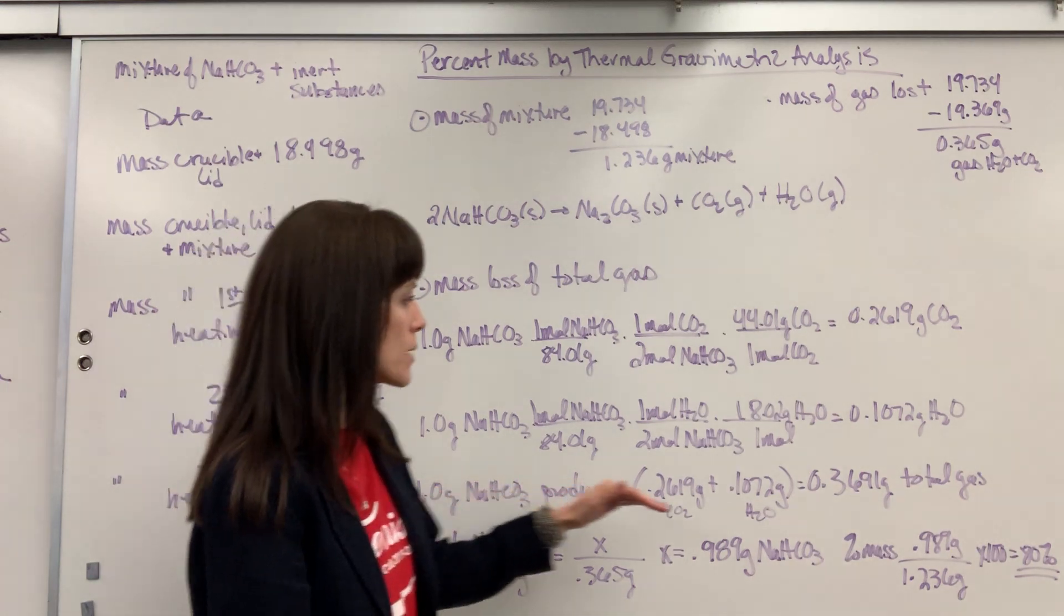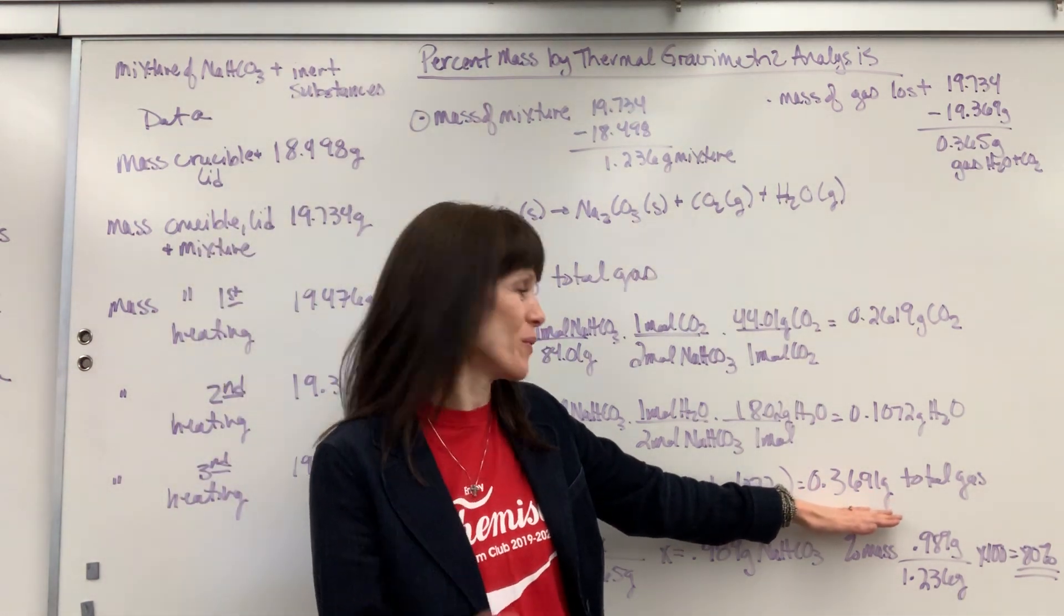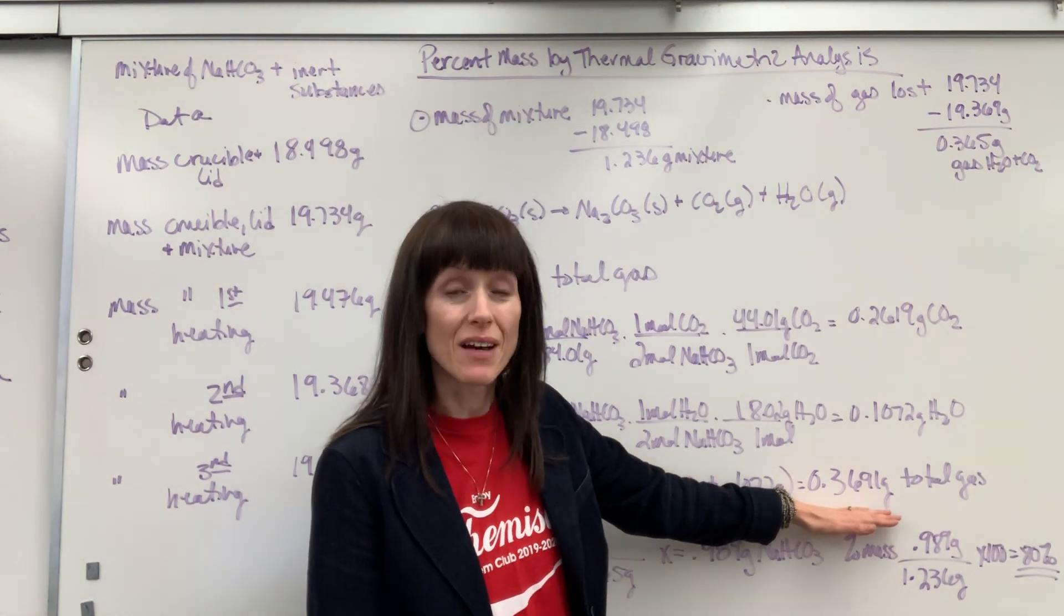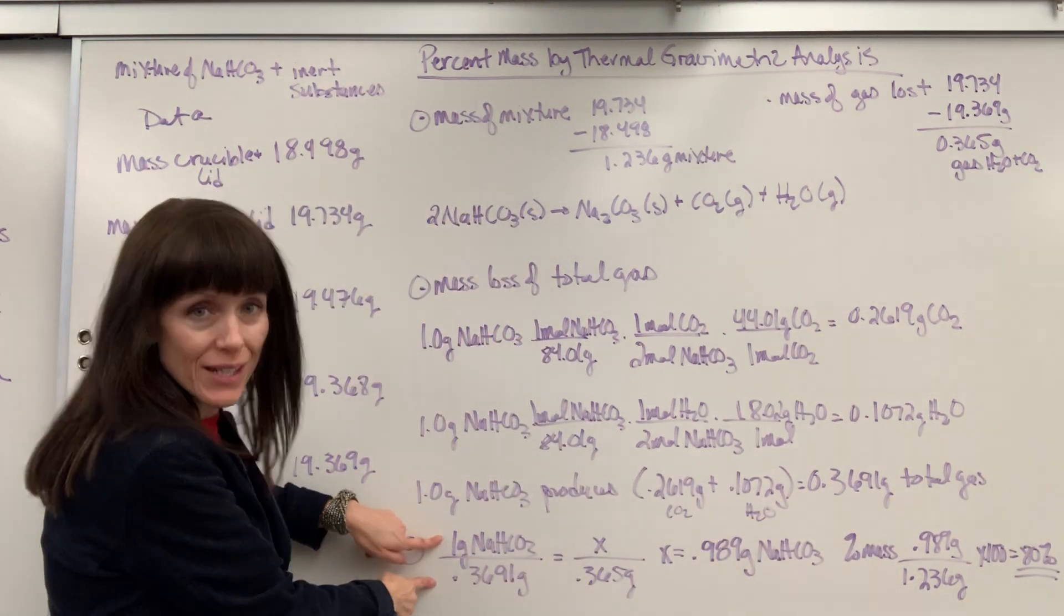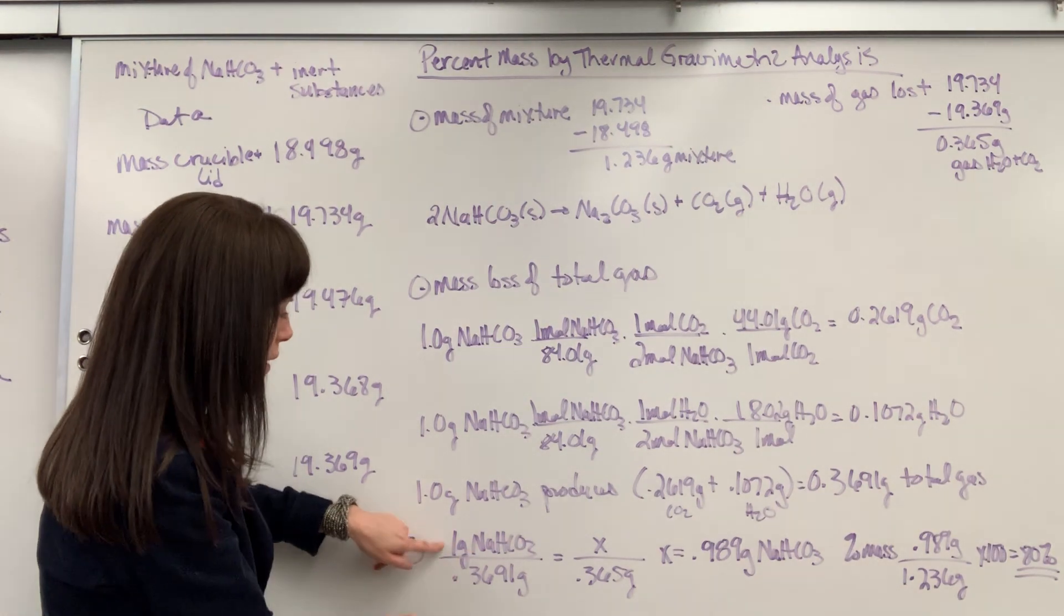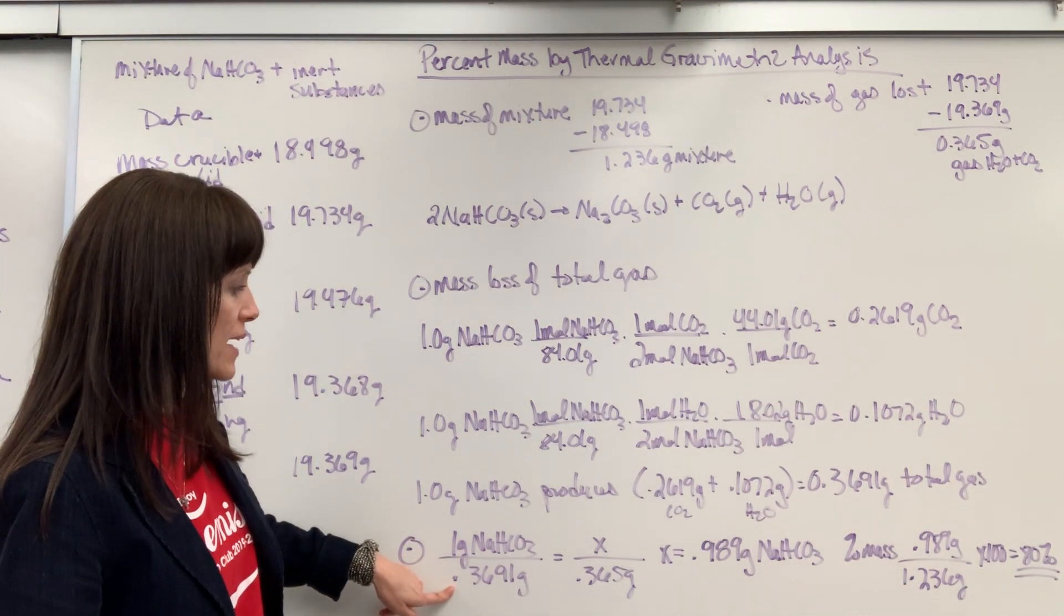1 gram of sodium bicarbonate is going to release, evolve 0.3691 grams of gas total. So I write my ratio right here: 1 gram sodium bicarbonate releases 0.3691 grams of gas.